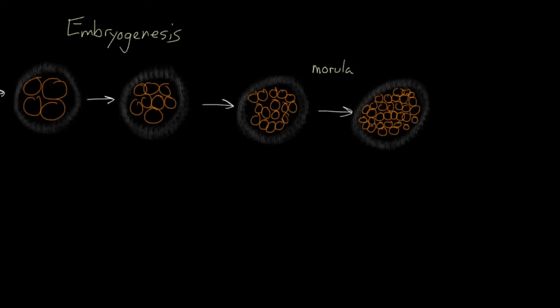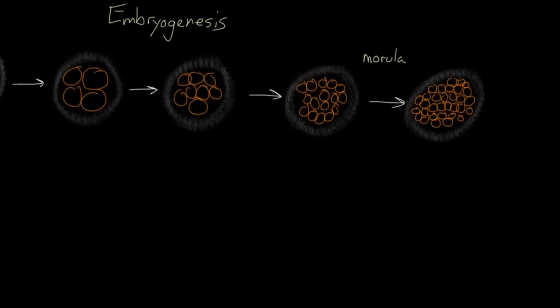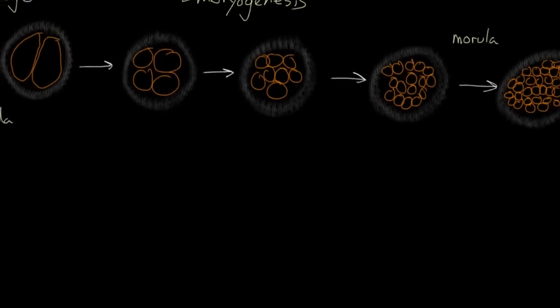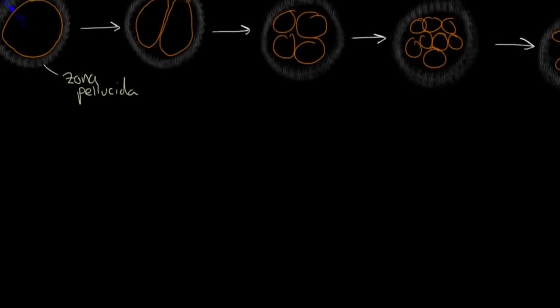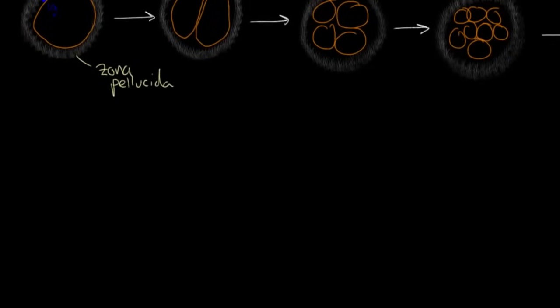So you're finished with the cleavage stage of early embryogenesis. You've gone from one cell and just divided without growing at all into two, four, eight, 16, and then 32 cells. And now more interesting things start to happen.